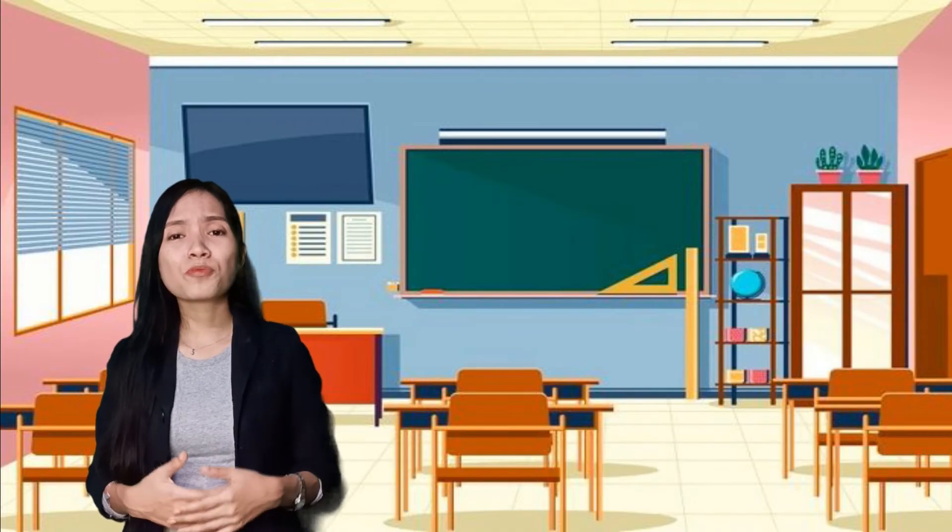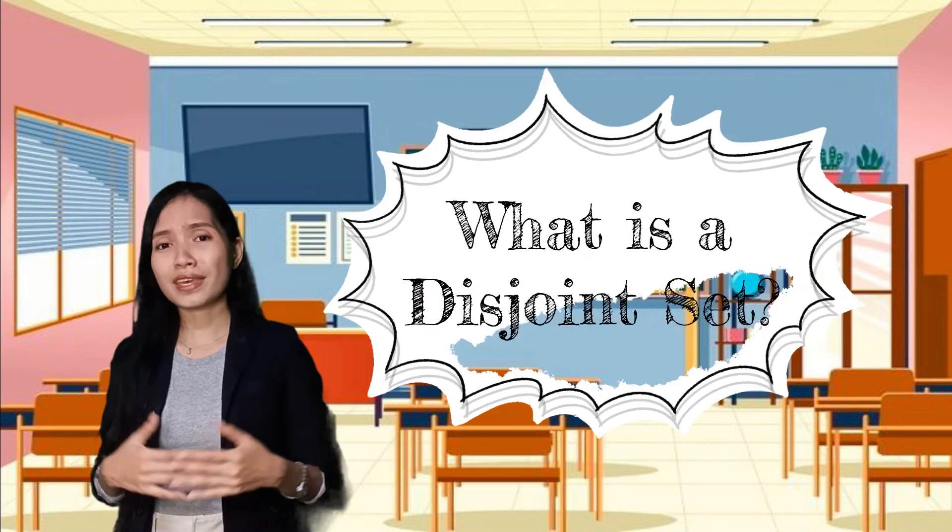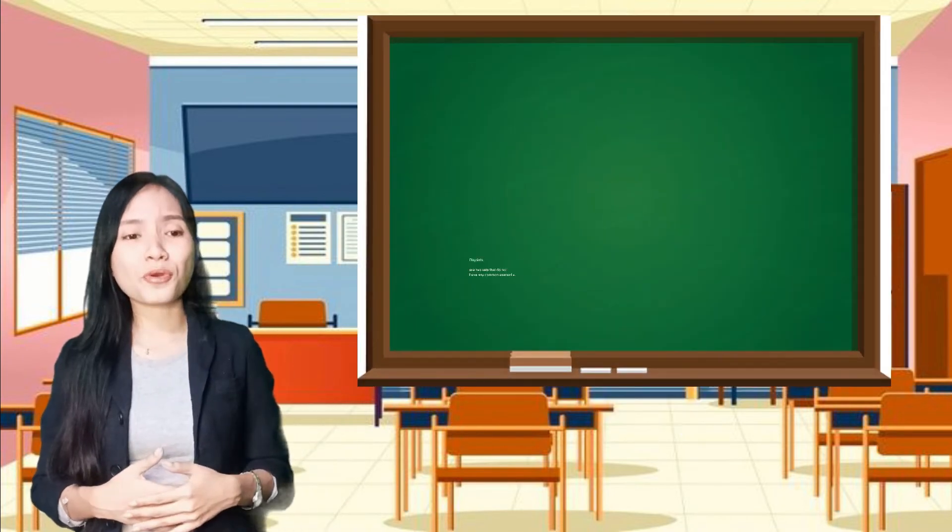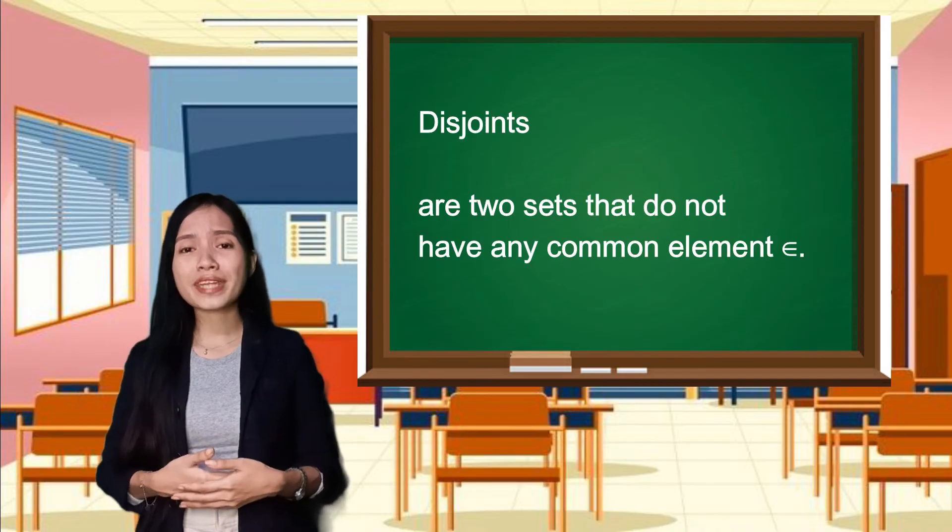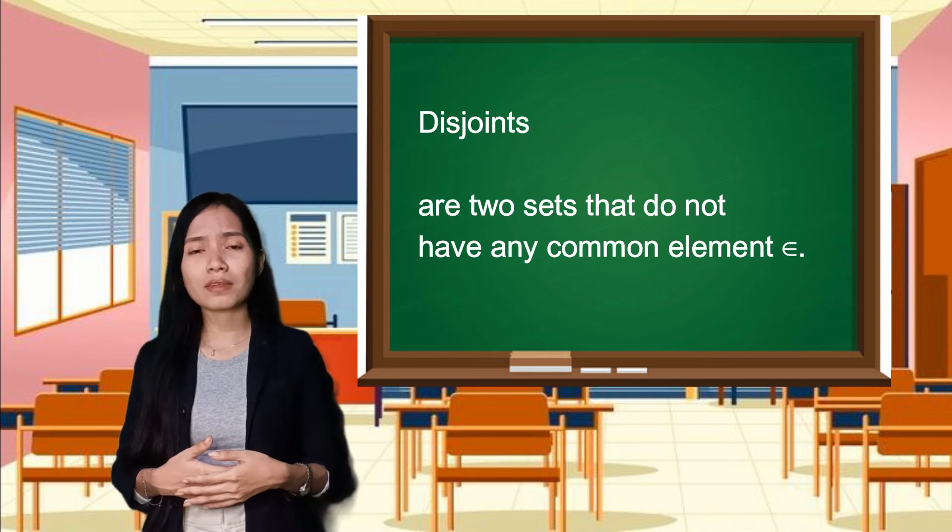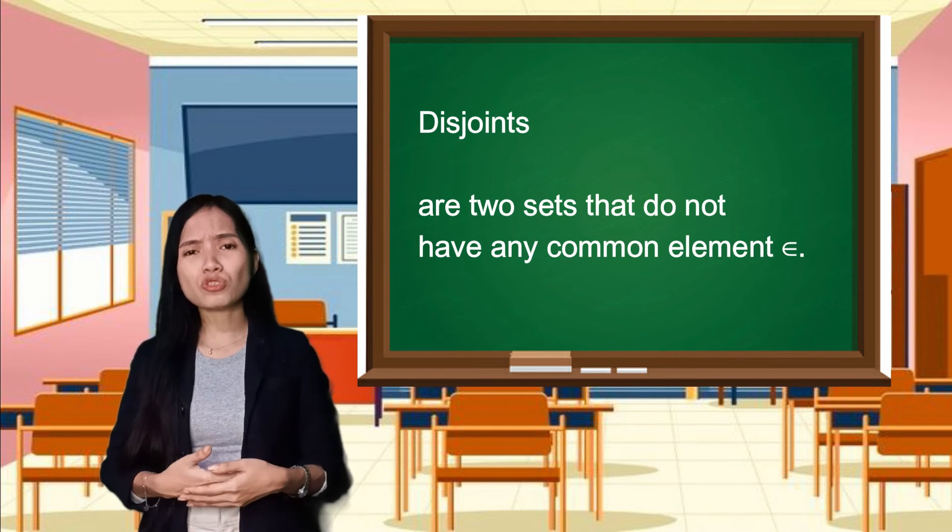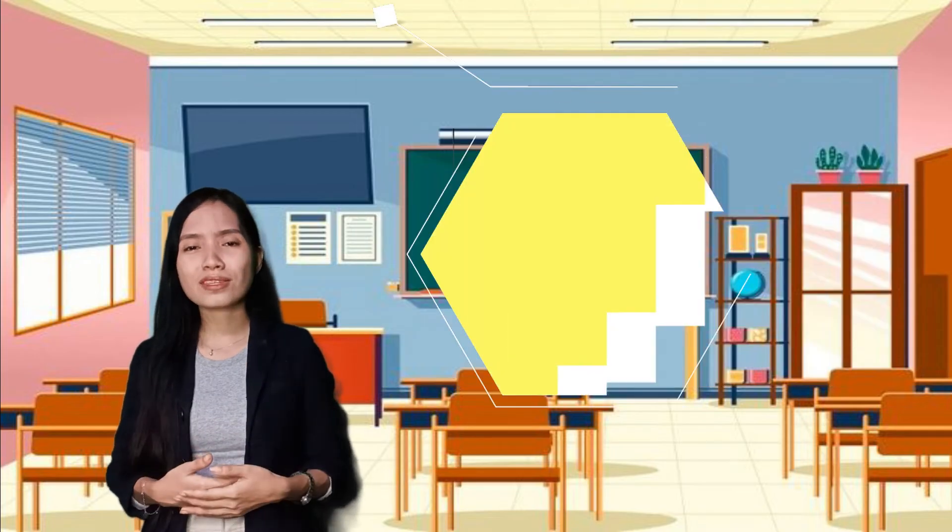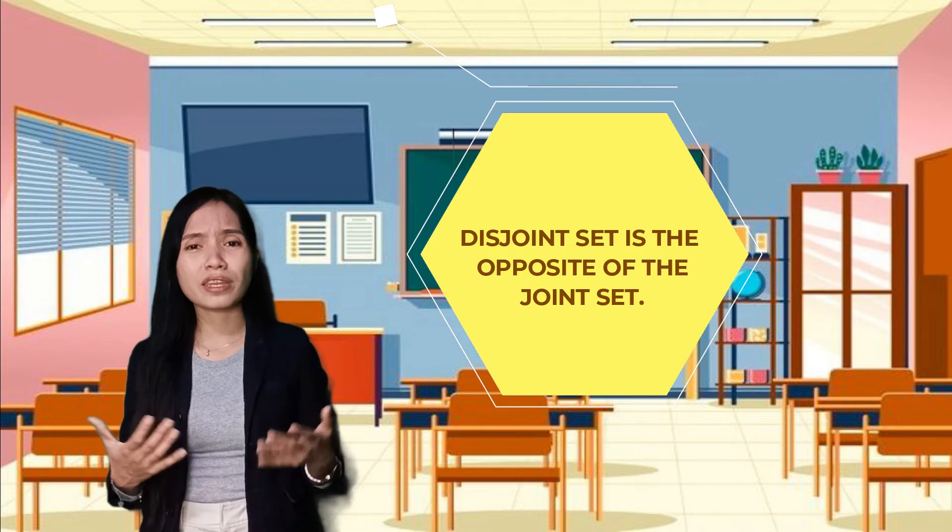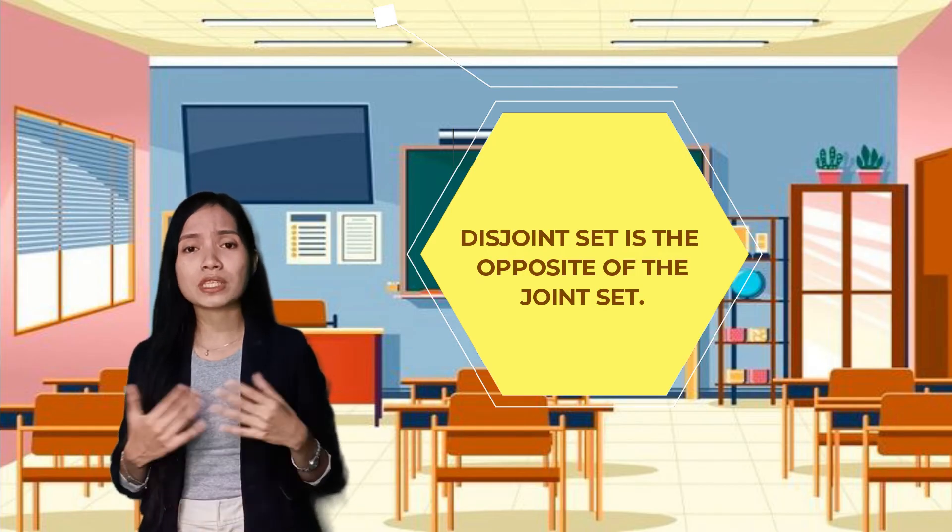So now let us move on with the disjoint set. What is a disjoint set? According here, a disjoint are two sets that do not have any common element. So it doesn't have any common element or same element within the two sets. Disjoint set is the opposite of the joint set because it doesn't have such any common or same element or number within a specific set.